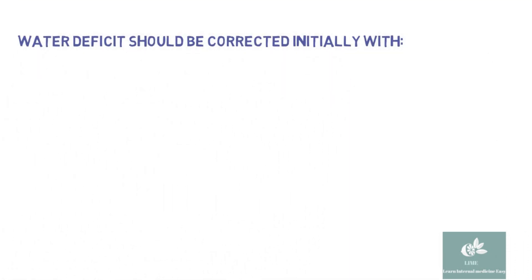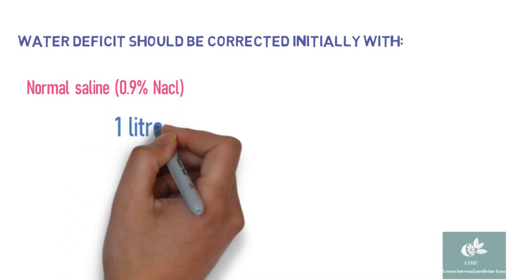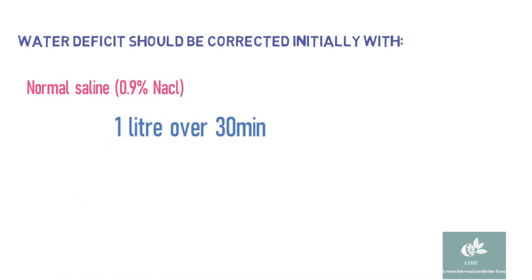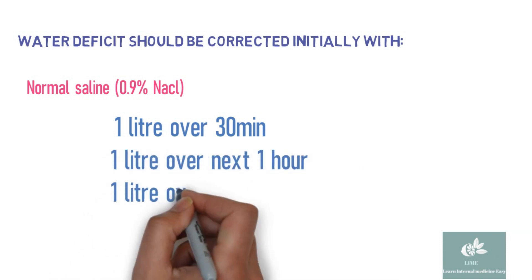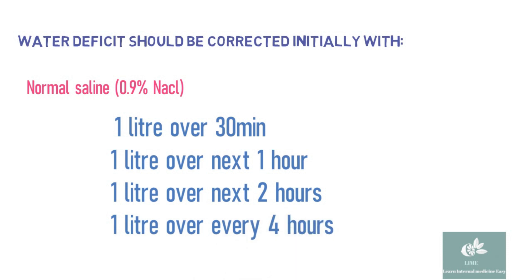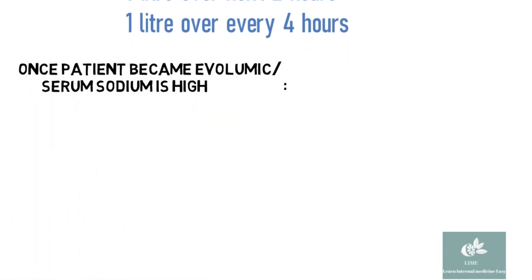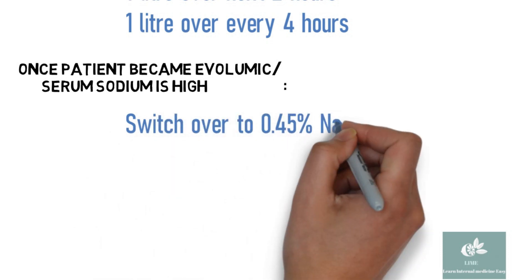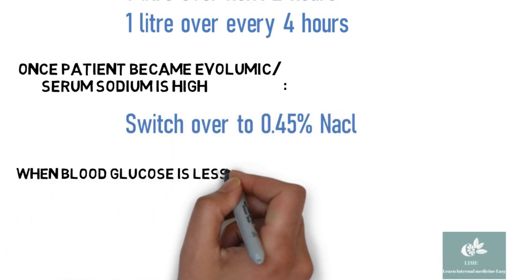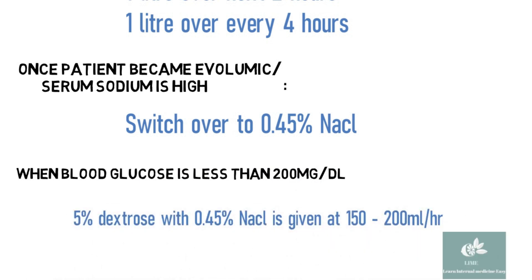Water deficit should be corrected initially with normal saline: 1 liter of NS is infused over 30 minutes, then next 1 liter over the next 1 hour, then 1 liter over the next 2 hours, and 1 liter of NS over every 4 hours thereafter. Once the patient becomes euvolemic or corrected sodium level is high, switch over to half normal saline. When blood glucose level becomes less than 200 mg per deciliter, 5% dextrose with half normal saline is given at the rate of 150–200 ml per hour.